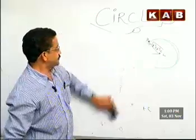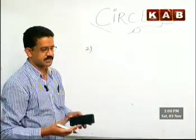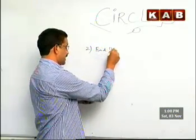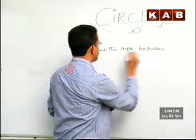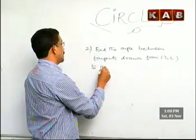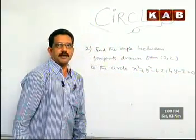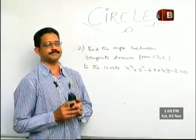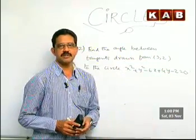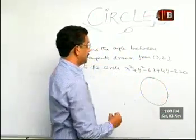Now let us work out the second question. Our plan is to work out some of the previous intermediate exam questions so that you will have an idea how they are asking. Please write down: find the angle between the tangents drawn from (3, 2) to the circle x² + y² − 6x + 4y − 2 = 0. It is like the earlier question.